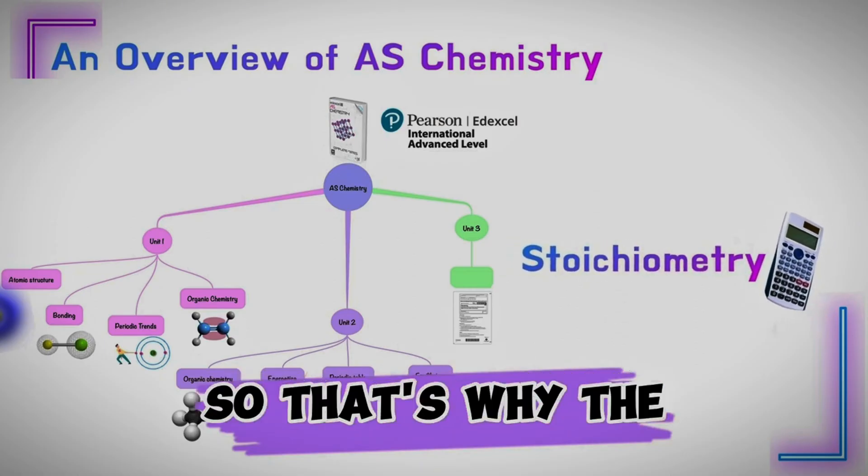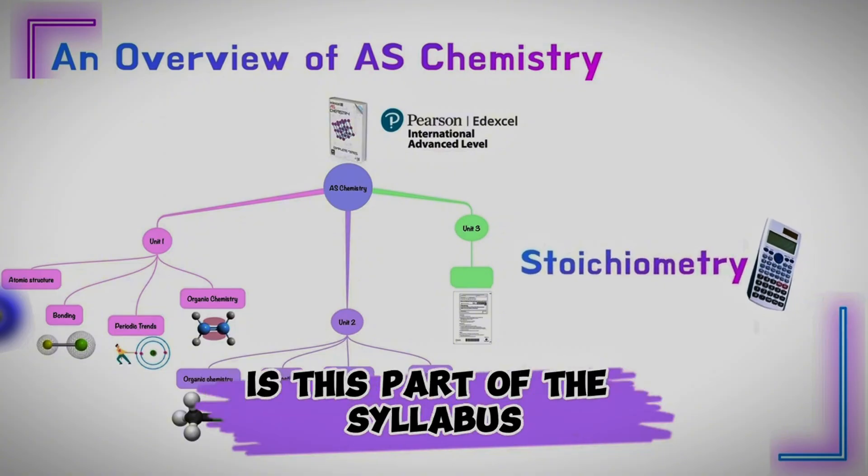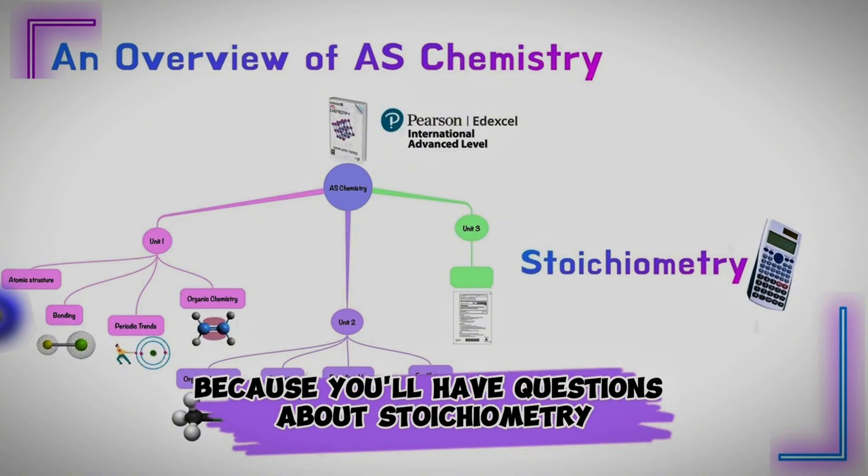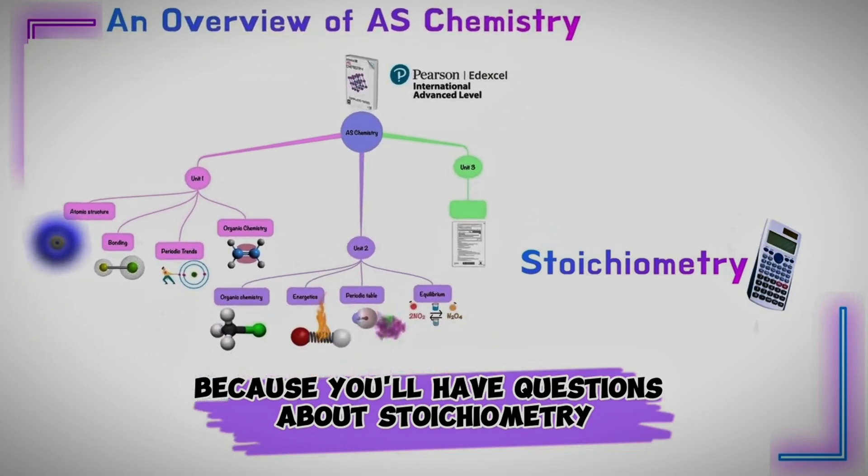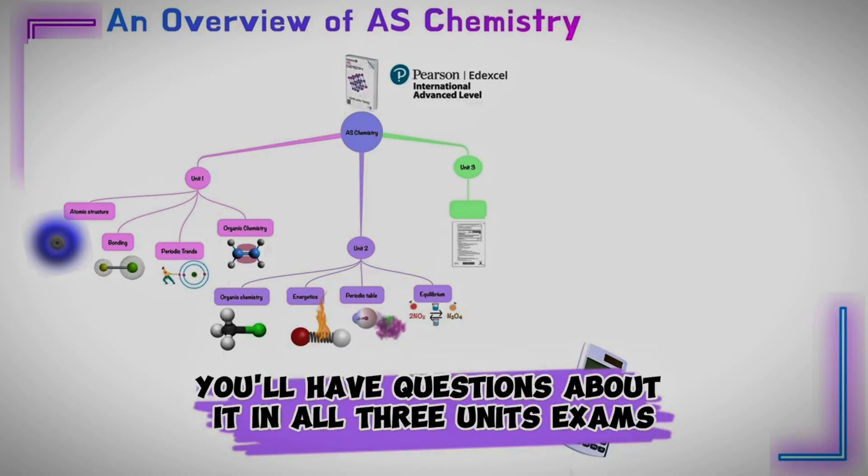Stoichiometry is a major part of all three units of the exam. That's why the very first thing you should work on is this part of the syllabus, because you'll have questions about stoichiometry, the molar concept, the calculation part of chemistry in all three unit exams.